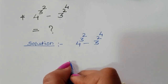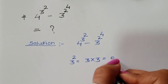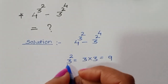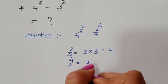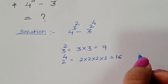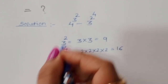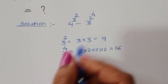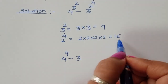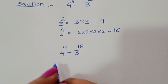First we take 3 power 2, so 3 power 2 is equal to 3 times 3, which is equal to 9. Now for 2 power 4: 2 times 2 times 2 times 2 is equal to 16. So the value of 3 power 2 is 9 and 2 power 4 is 16. So we can write 4 power 9 minus 3 power 16.